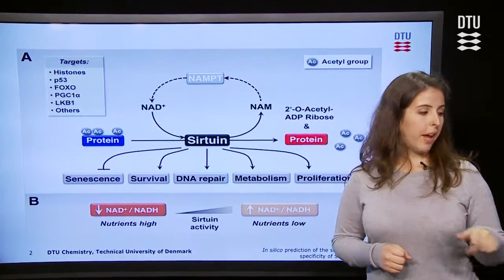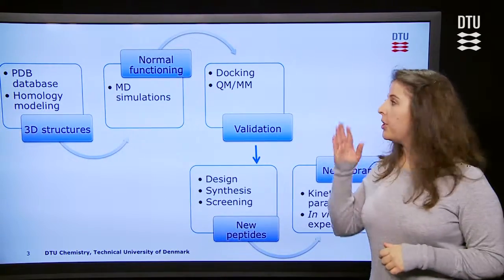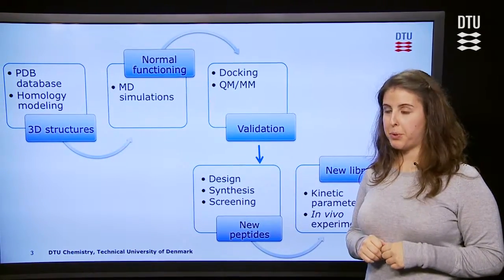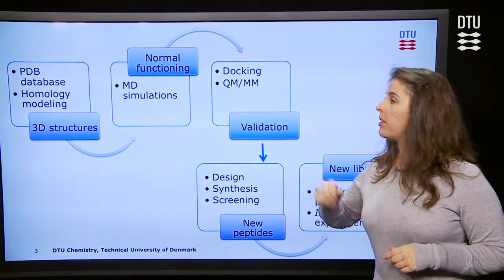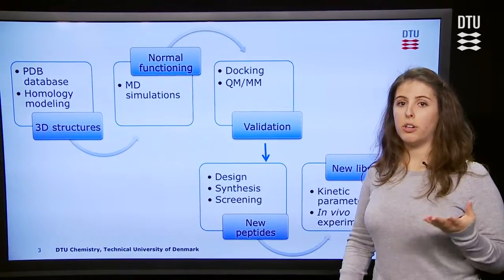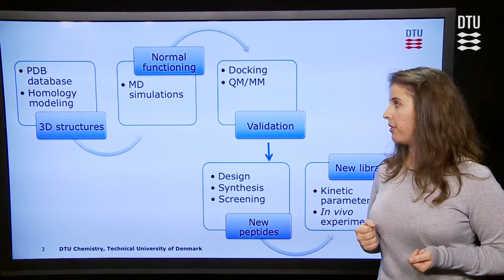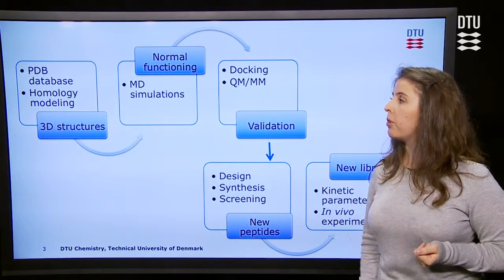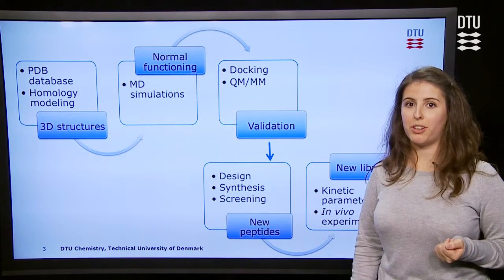The plan is to start by obtaining the 3D structures for each one of the seven proteins. We can use the PDB database or, when there is no crystallographic data available, using molecular homology modeling.